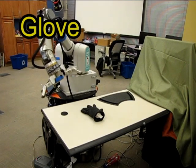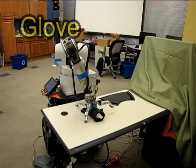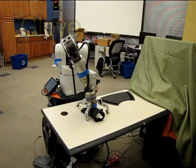This experiment, grasping a glove, shows that although we do not model deformable objects, we can handle them if the deformations are small.